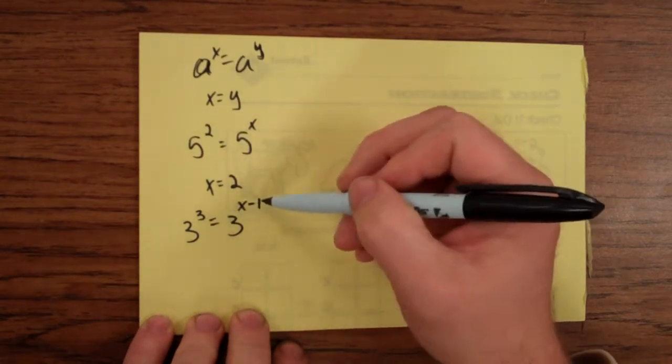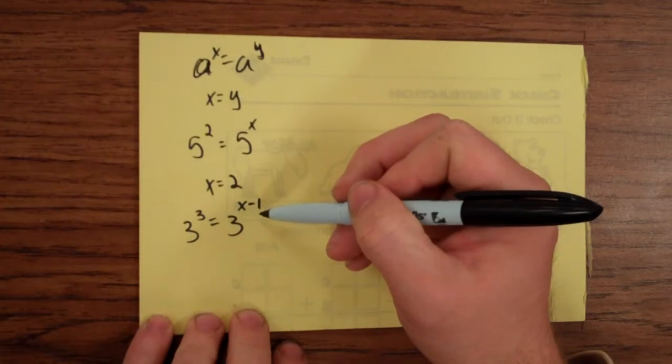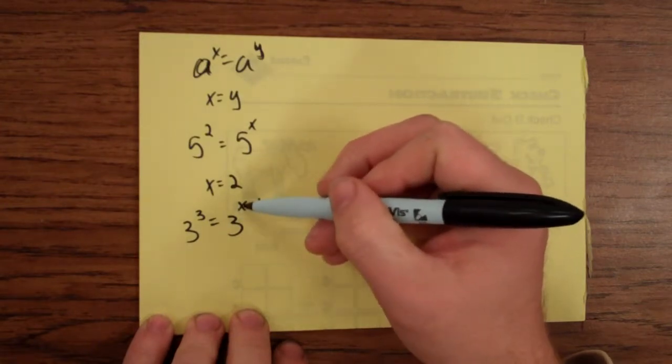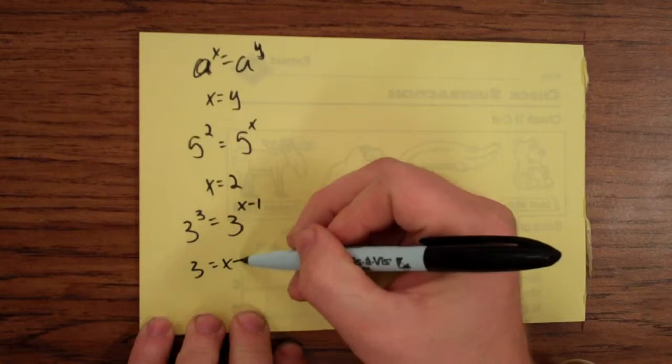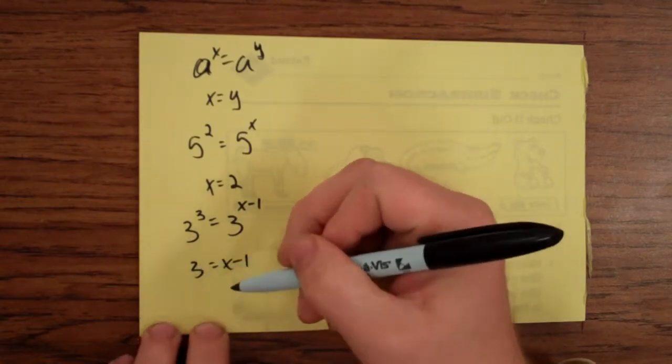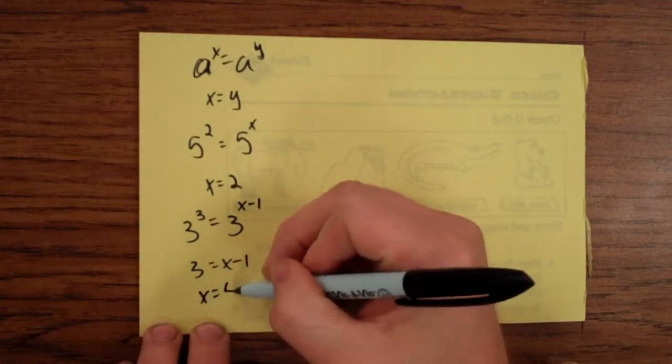If this is the third power, this would also have to be the third power. And if this is the third power, then the question is what's x? If this is 3, then what's x? x is 4.